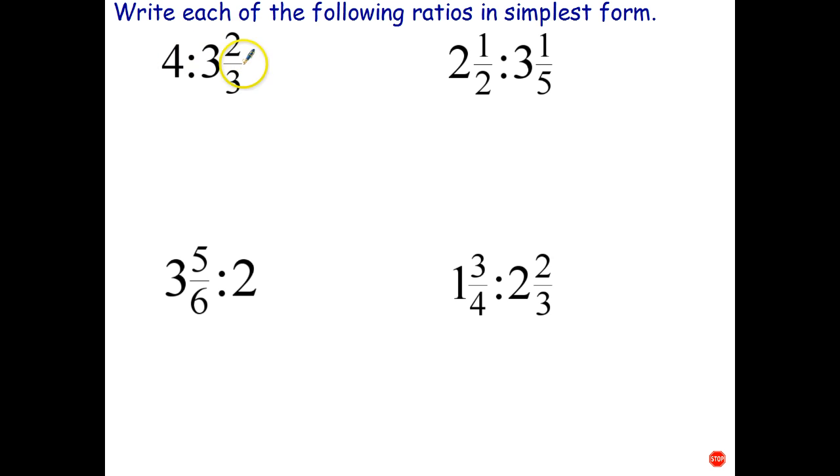So let's have a look at this question up here. 4 is to 3 and 2 thirds. Well to start with we're going to write each of these as a fraction. So 4 we write as 4 over 1. 3 and 2 thirds - well 3 times 3 is 9 plus 2 is 11. So that becomes 11 thirds.